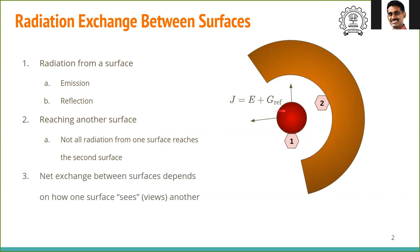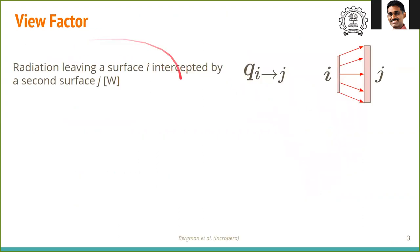So when we want to find out the net radiation exchange between two surfaces, we need to find out how much one surface sees or views the other surface. To do that, we define what is known as the view factor. Before we define view factor, let us look at the various terms associated with radiation exchange.